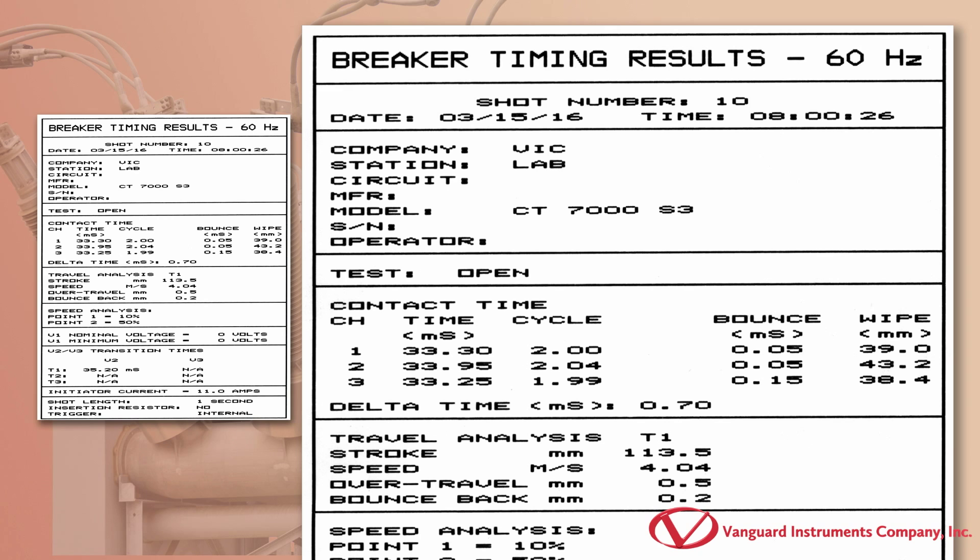The CT7000S3's frequency setting is shown in the header. The frequency value is used to convert the contact time from milliseconds to cycles.